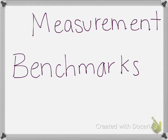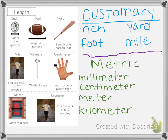We're going to look at three different types of measurement: length, liquid volume, and mass. When we measure length, we're looking at distance — how long something is. There are two different ways we can measure length: customary measurements or metric measurements. In the United States, we primarily use customary. Our customary measurements for length are the inch, the foot, the yard, and the mile, and those get larger as we go.